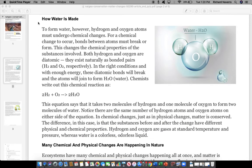How Water is Made. To form water, however, hydrogen and oxygen atoms must undergo chemical changes. For a chemical change to occur, bonds between atoms must break or form. This changes the chemical properties of the substances involved.